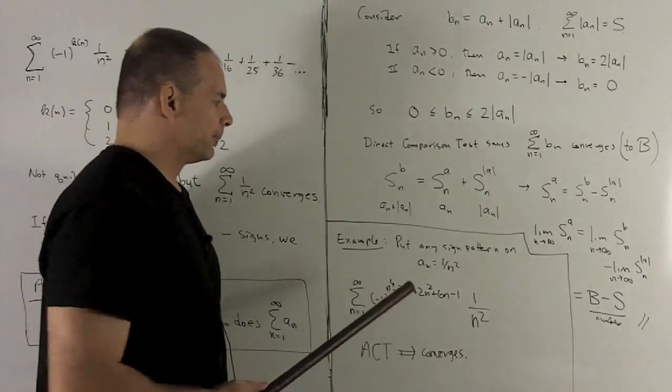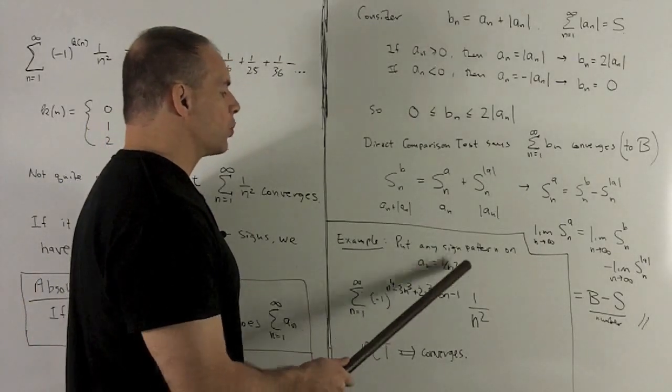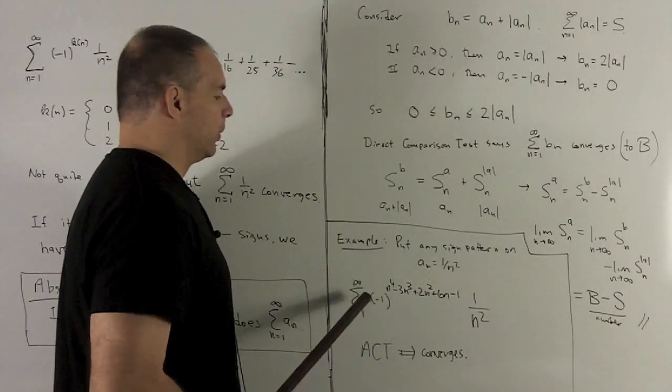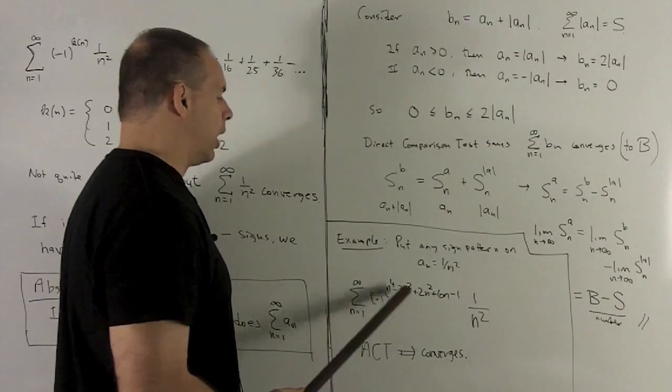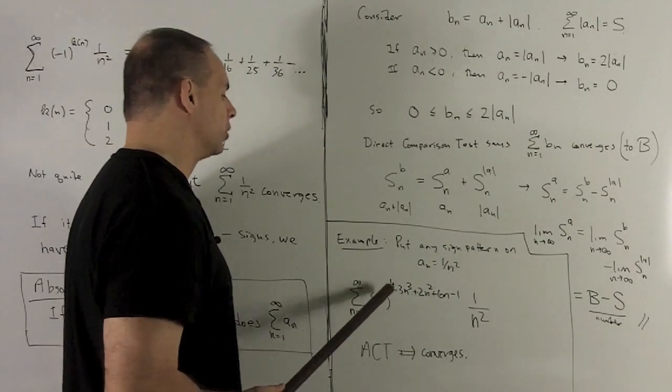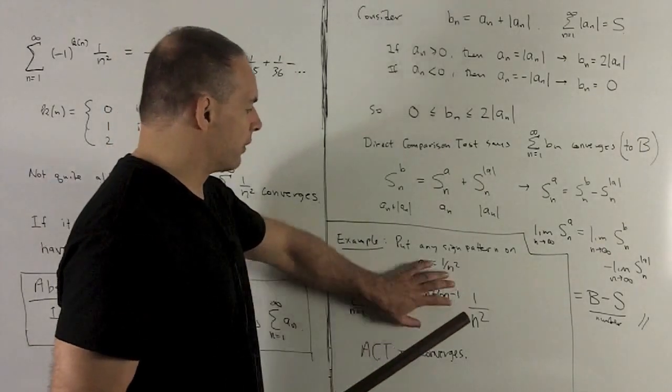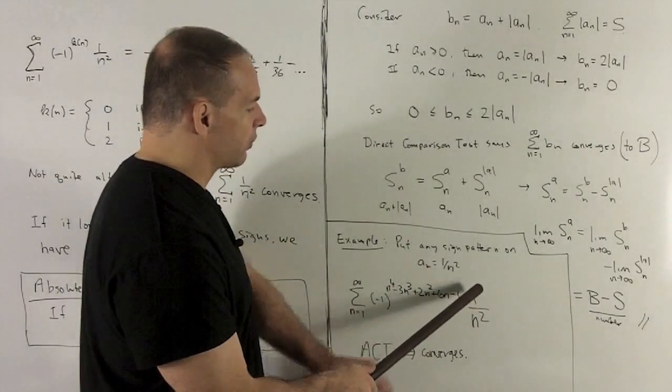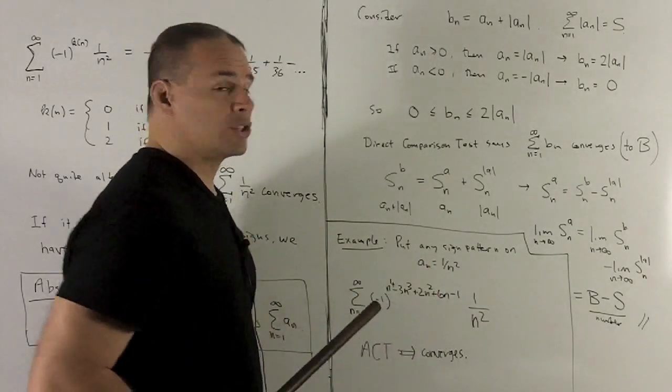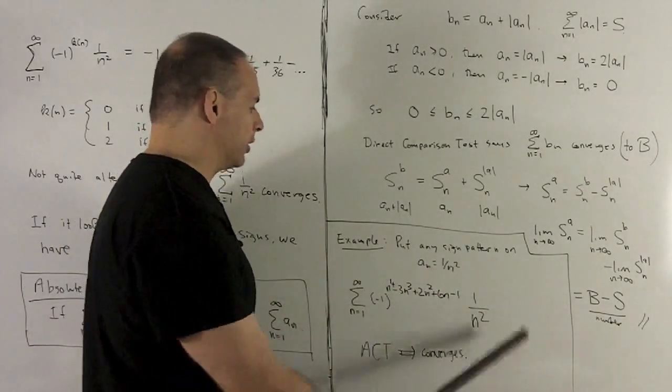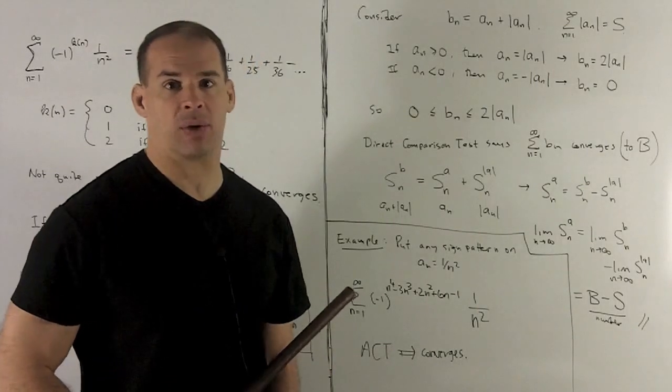Example. I'm going to take 1 over n squared as my a sub n. We can throw on any sign pattern you want. I have no idea what this sign pattern looks like, but by the absolute convergence test, all I need to do is cover that up. I know that the series for 1 over n squared converges, so now this thing automatically converges without actually having to write anything down.